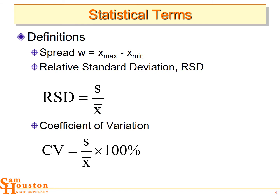Some other specific statistical terms: we have the spread of the data, also called the range — it's the max value minus the min value. We also have the RSD, the relative standard deviation, which is the standard deviation relative to the mean — taking the uncertainty value and dividing by the average value. You'll also hear the term CV, which is the relative standard deviation times 100%. It's saying what percent of our average value is uncertain.